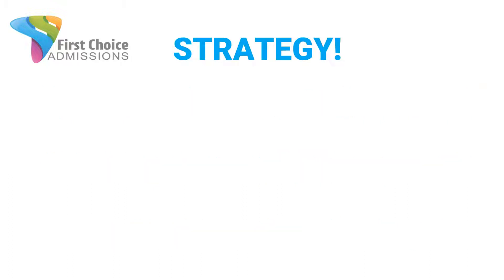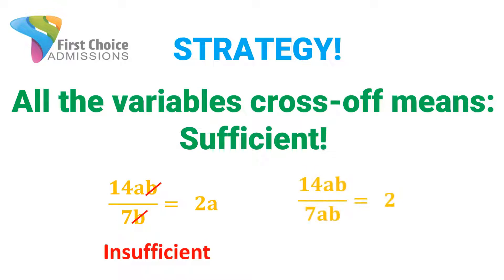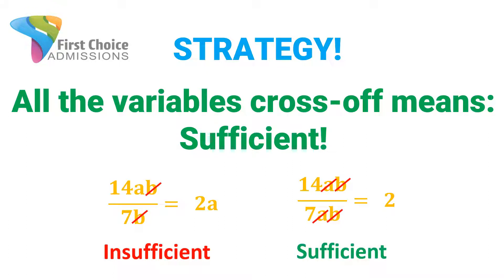The strategy here is deceptively simple. Anytime you're in a data sufficiency question that's asking you for a percent or a ratio, your job is very clear: you want to try and get all the variables to cross off. If you can, it means that the statement is sufficient. For example, 14AB over 7B — the B's cross off but we're left with 2A, so we don't know the exact value. That's insufficient. But 14AB over 7AB — the AB's cross off and we're left with 2. That is sufficient. On data sufficiency, you're only asked if you have enough information to get to an exact value, and if all variables cross off in a ratio, you do.